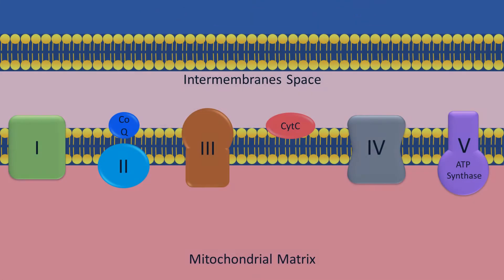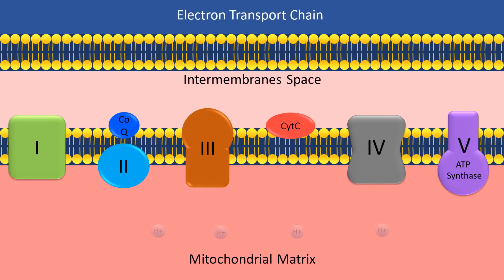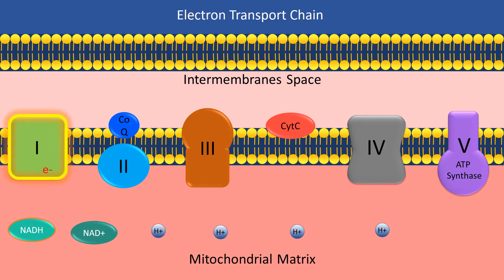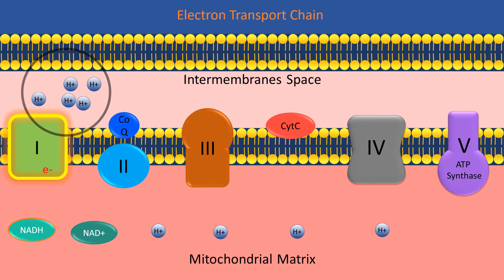In the mitochondrial matrix, protons are present, and NADH — produced in the TCA cycle — approaches complex 1 and donates its proton and its electrons, becoming NAD+. As a result of the electrons donated, complex 1 becomes supercharged with energy, which is utilized to pump protons from the mitochondrial matrix into the intermembrane space. Through this process, more and more protons are pumped, and consequently a proton gradient between the intermembrane space and mitochondrial matrix begins to form.